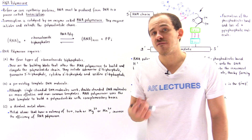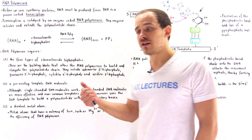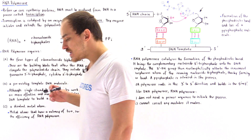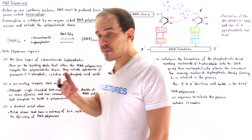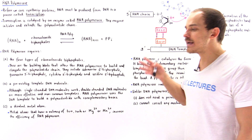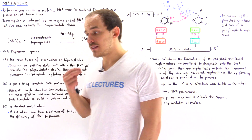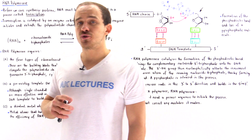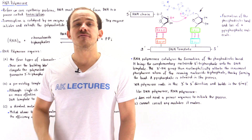RNA polymerase is involved in forming RNA molecules during the process of transcription — essentially copying the code found in DNA to form RNA molecules such as transfer RNA, messenger RNA, and ribosomal RNA molecules. In E. coli cells — prokaryotic cells such as bacterial cells — a single RNA polymerase forms all the different types of RNA molecules: mRNA, tRNA, and rRNA. But in human cells, we have three different RNA polymerases, and each one synthesizes a specific type of RNA molecule, as we'll discuss in a future lecture.